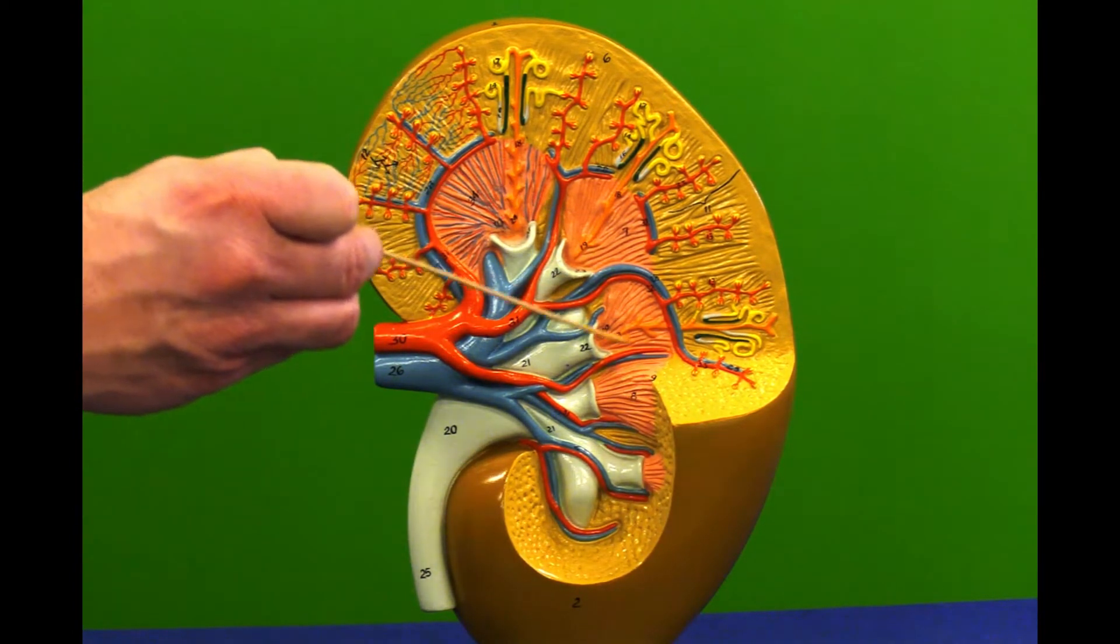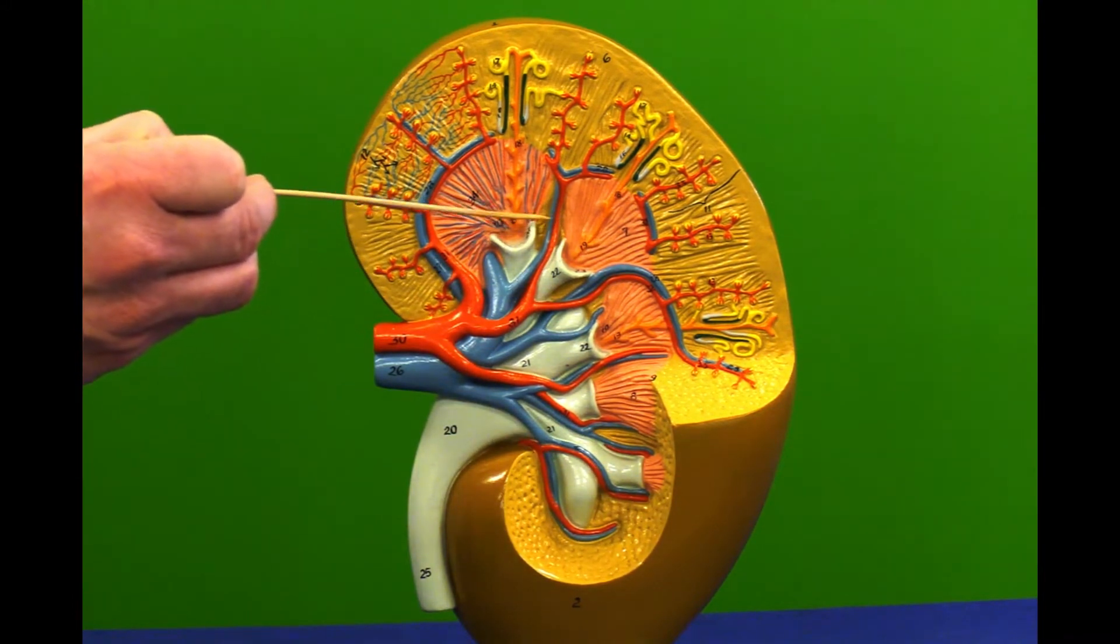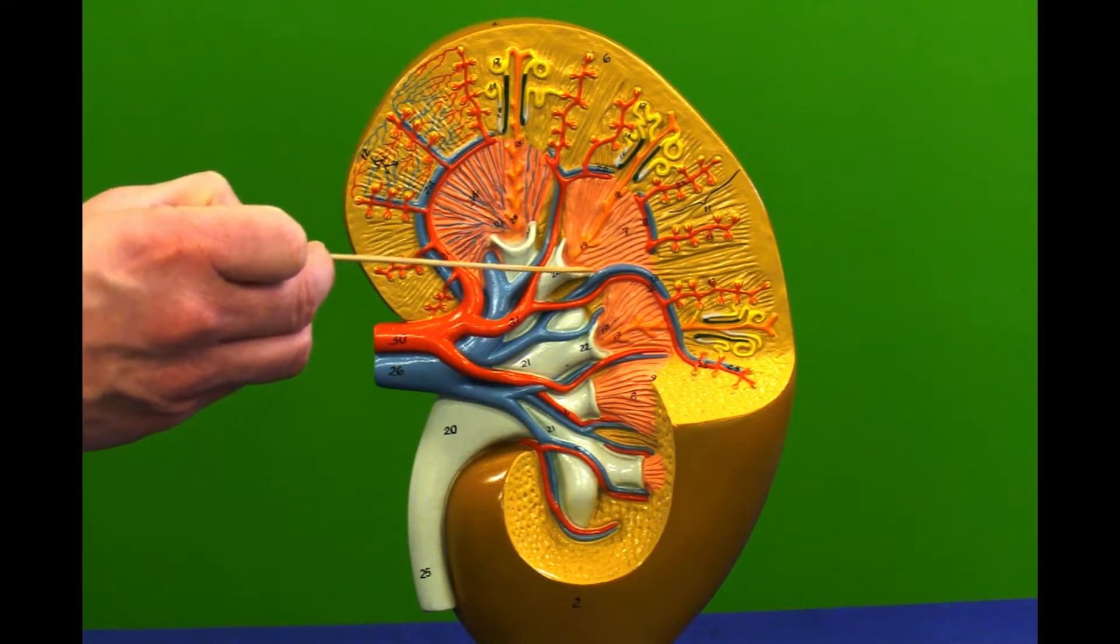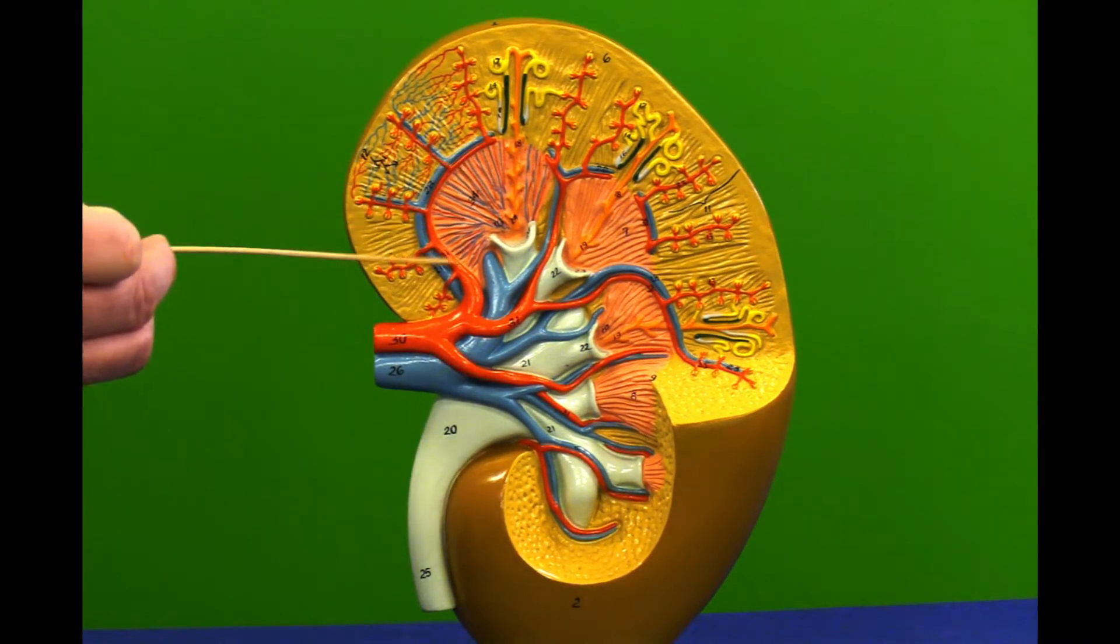The middle of the kidney is known as the medulla, and in the medulla we have many of these structures known as pyramids.